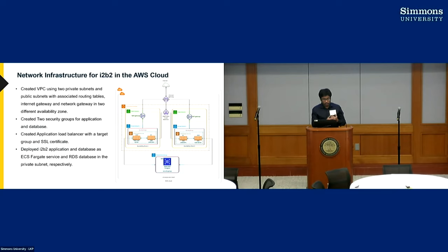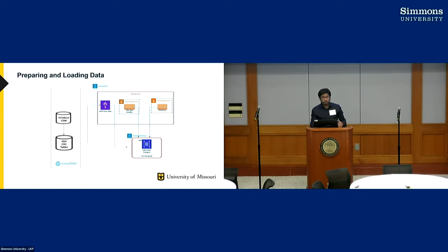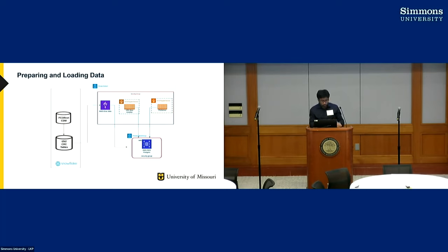Only resources running from private subnets can access the database resources. To communicate outside of the VPC, we used NAT gateway and the application load balancer. After ensuring the deployment of our I2B2 in a secure environment, we prepared and loaded our PCORNet data in AWS. Since our database is in the private subnet, we had to run some additional services to complete the ETL process.